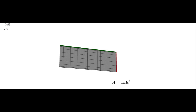Therefore, the surface area of the sphere is equal to 4πr² square units. If we know the radius R of a sphere, we can calculate the surface area of the sphere easily.